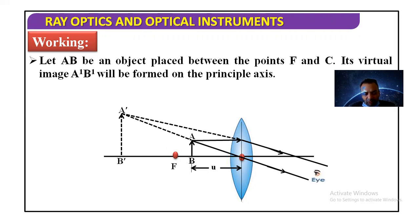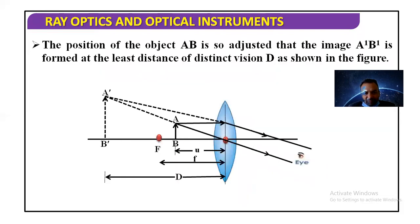Let us define the variables. U is the distance of the object from the center of the lens. The image is formed at the least distance of distinct vision, taken as capital D, which equals 25 centimeters. So the image is formed at a distance of 25 centimeters from the optical center. F is the focal length, also measured from the optical center. Our target is to find out the magnifying power of the lens.